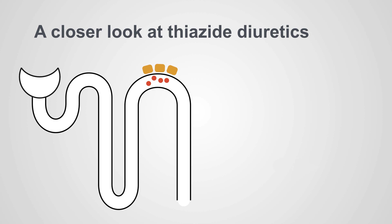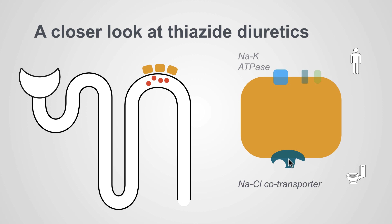Let's take a closer look at the mechanism of thiazide diuretics at the cellular level. Looking at the distal convoluted tubule, you have the sodium chloride cotransporter on the apical membrane, the sodium-potassium ATPase, a potassium channel, and a chloride channel on the basolateral membrane — the side touching the blood to be returned to the body. The apical membrane is the tubular side where fluid will end up in the urine. Sodium is reabsorbed through the sodium chloride cotransporter and then exits the cell via the sodium-potassium ATPase.